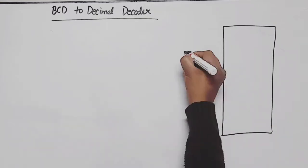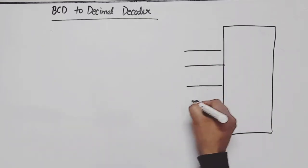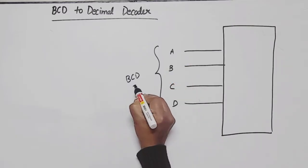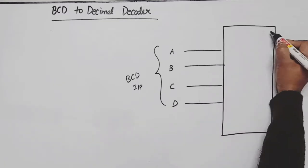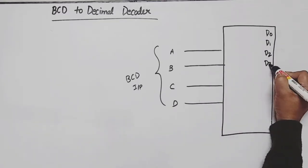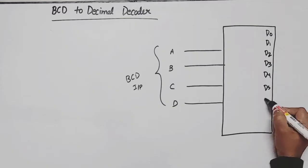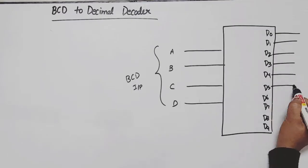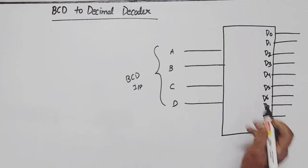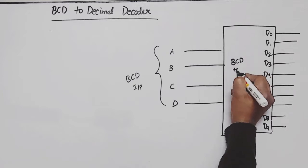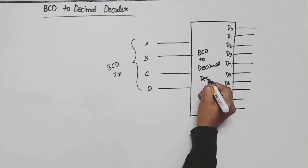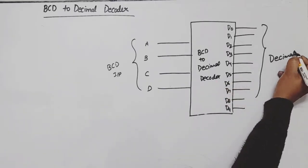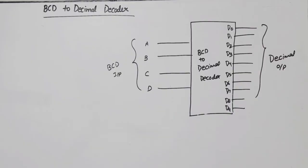As the name suggests, on the input side we have BCD numbers — 4 bits: A, B, C, D. These are our BCD inputs. On the output side we get decimal outputs: D0, D1, D2, D3, D4, D5, D6, D7, D8, and D9. That is the block diagram symbol. Now we will look at the basic internal circuit of the BCD to decimal decoder. These outputs are our decimal outputs.